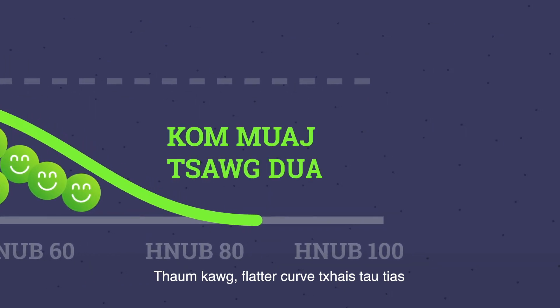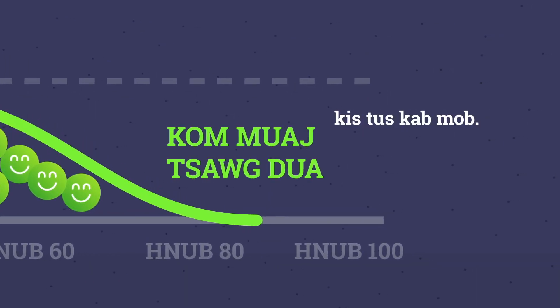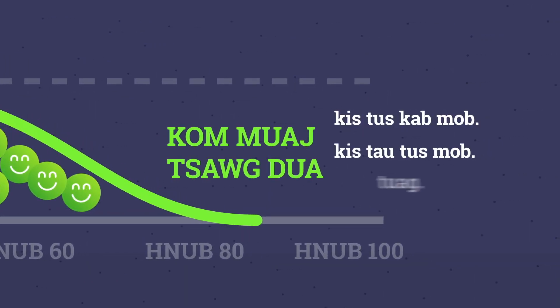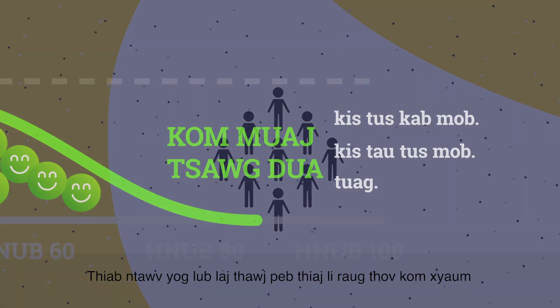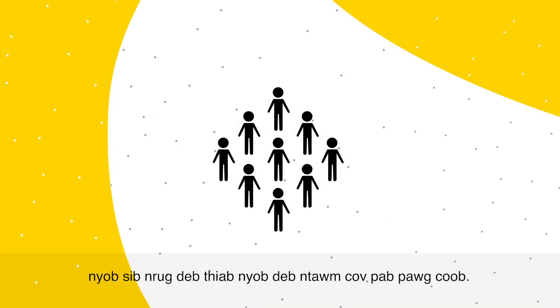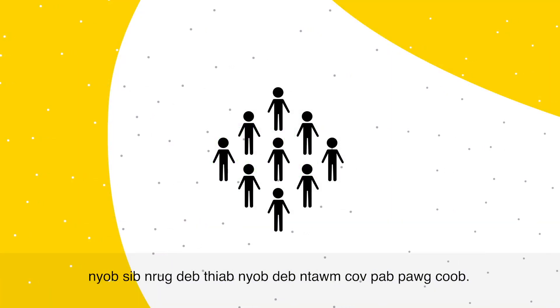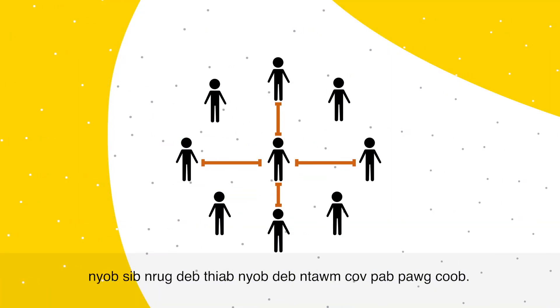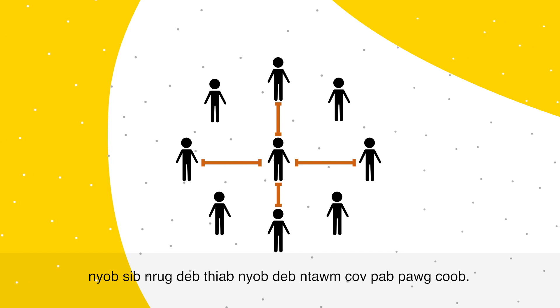In the end, a flatter curve means that fewer people will get infected, fewer get sick, and fewer will die. And that's the reason we're being asked to practice social distancing and stay away from large groups of people.